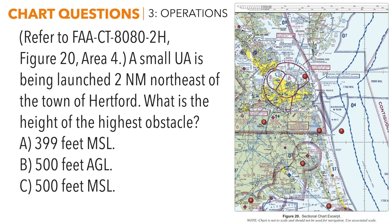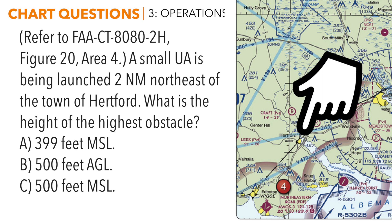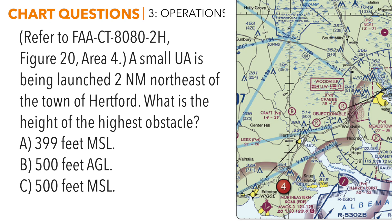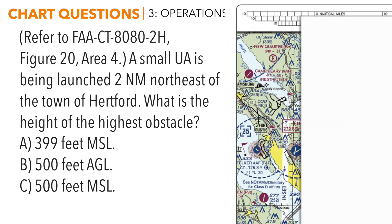Staying on figure 20 for another most-missed question: refer to figure 20, area 4. A small unmanned aircraft is being launched two nautical miles northeast of the town of Hertford. What is the height of the highest obstacle? We go to area 4 and find Hertford to the north. This question requires measuring distance in nautical miles, so we use the top distance scale and measure out two nautical miles on our piece of paper — that's two tick marks.